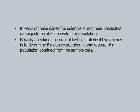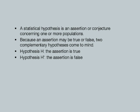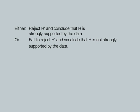In each of these cases there is a conjecture about the system or population, and we have to determine this conjecture based on some sample data. It is very similar to constructing confidence intervals, but the way the question is posed is slightly different. A statistical hypothesis is an assertion or conjecture concerning one or more populations. In hypothesis testing, two complementary hypotheses come to mind: either the assertion is true or it is false. Some people use H and H-dash — H for the assertion is true and H-dash for false. We can either reject H-dash and conclude H is strongly supported by the data, or fail to reject H-dash and conclude H is not strongly supported.